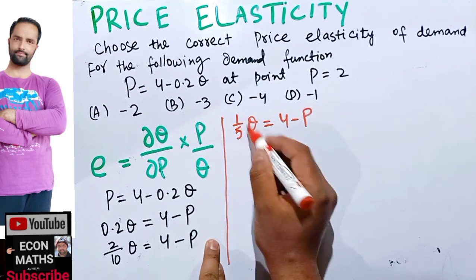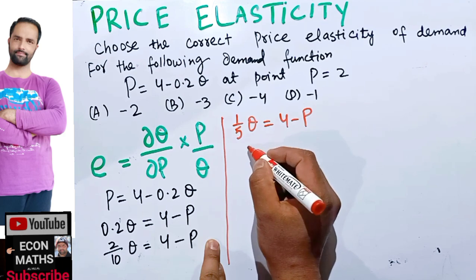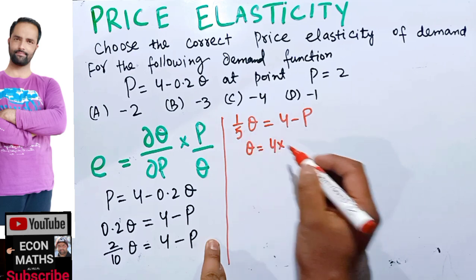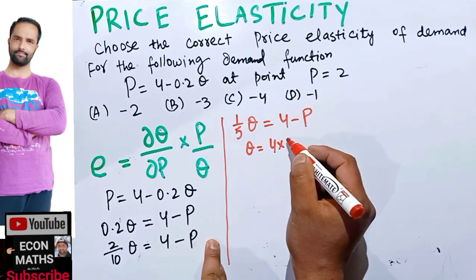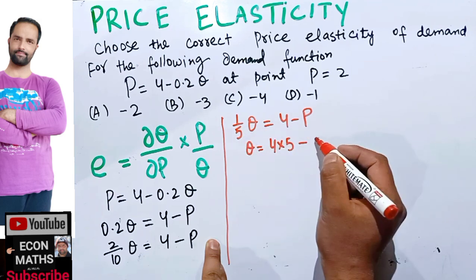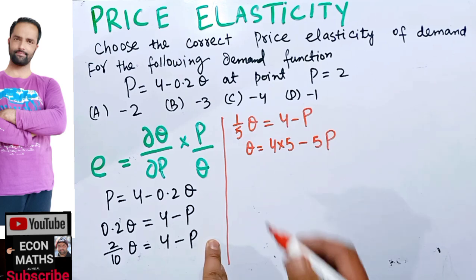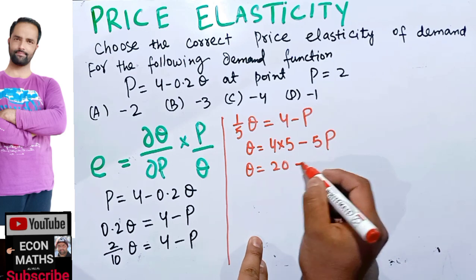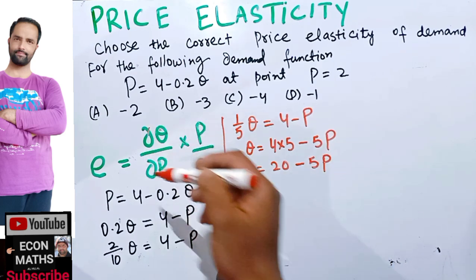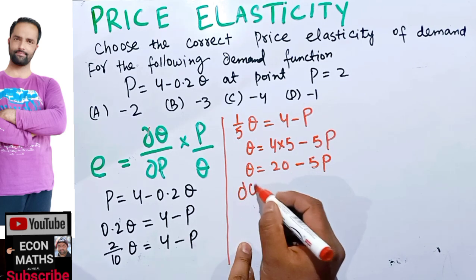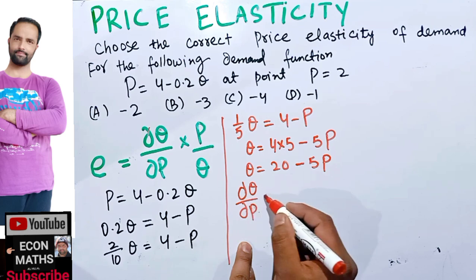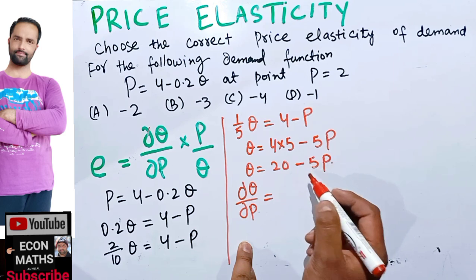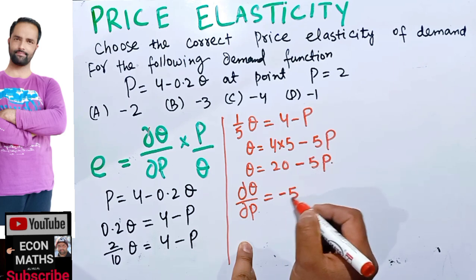Transposing the 1 upon 5, it gets reciprocated, giving us q equals 5 times (4 minus p), which means q equals 20 minus 5p. Now, dq upon dp means taking the derivative of this demand function with respect to price. The derivative of the constant 20 is 0, and the derivative of 5p is 1, leaving us with minus 5.